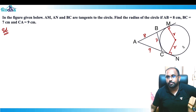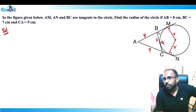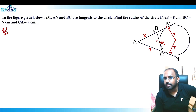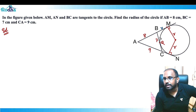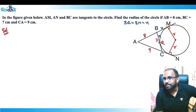Let's call the point where BC touches the circle Q. Since BQ and BM are tangents from the same external point B, if BM = x, then BQ = x as well — because from any external point, both tangents drawn are equal in length. So QC = 7 − x.